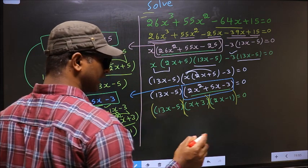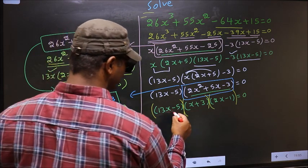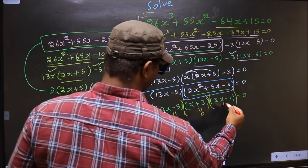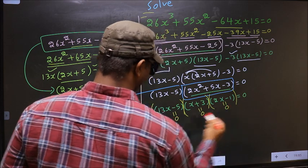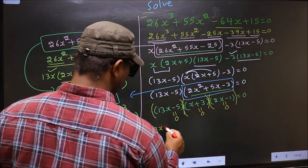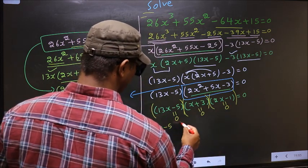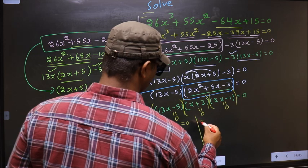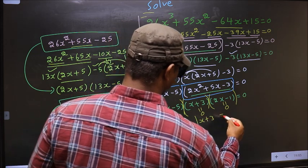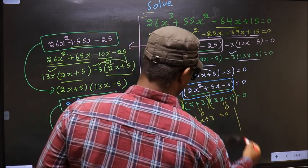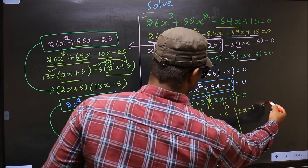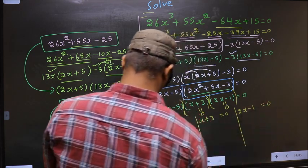So to get x values, we should equate each bracket to 0. That is: 13x minus 5 equal to 0, x plus 3 equal to 0, and 2x minus 1 equal to 0.